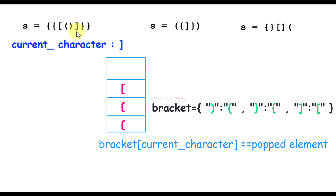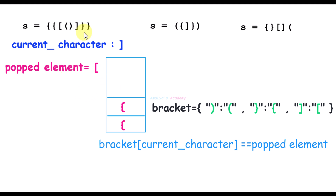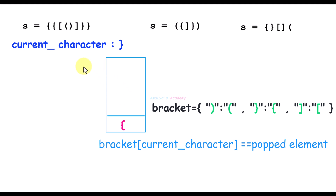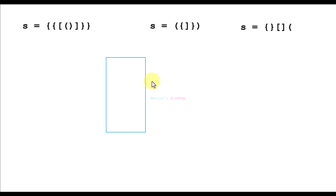Next character is a closed square bracket. The stack is not empty, so we pop the element and compare — it is a match, so we continue. Next character is also a closing bracket — pop from the stack, compare with the current character — it is a valid pair, so it is a match. Next character is also a closing bracket — remove an element from the stack, compare — it is also a match. We have no more characters. Now we check whether the stack is empty — yes it is, so it is a valid string.